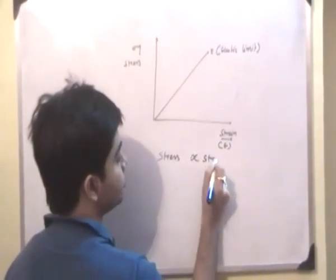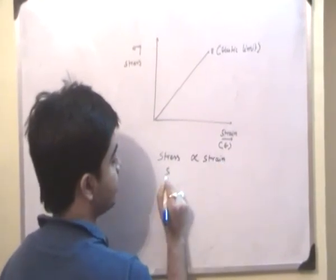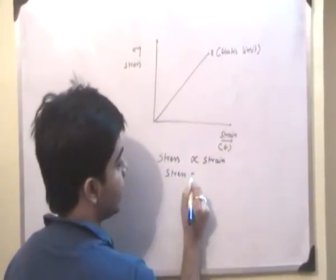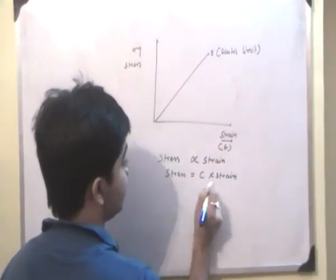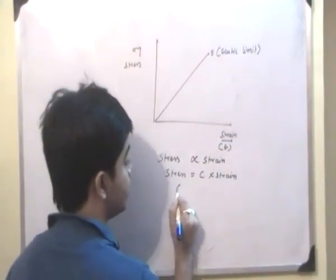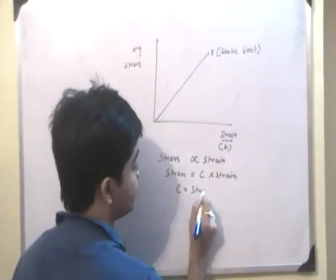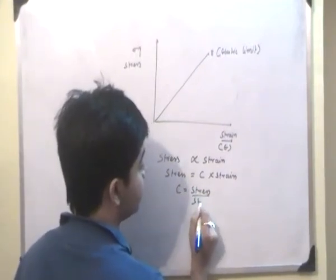That is, stress will be directly proportional to strain. Stress can be represented as C into strain. Now the C is nothing but the modulus of elasticity, so C is equal to stress by strain.